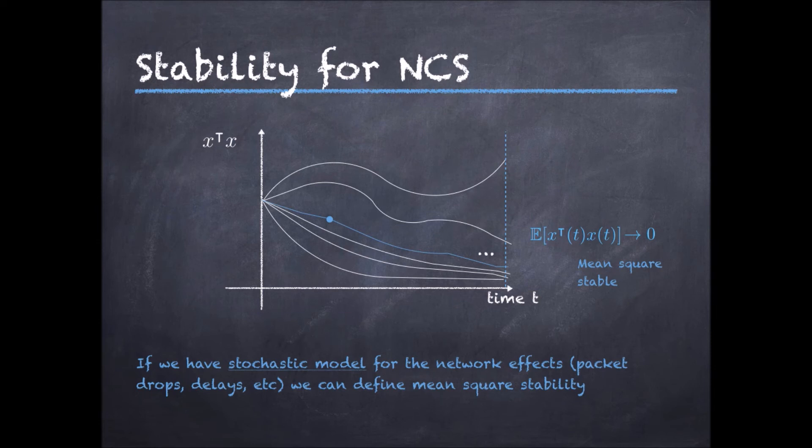It is quite a strong property because if we can prove that the system is mean square stable, then we can conclude that for any possible realization of the delays and packet drops, the state will eventually converge to zero as time goes to infinity, although it can have some nasty transients.